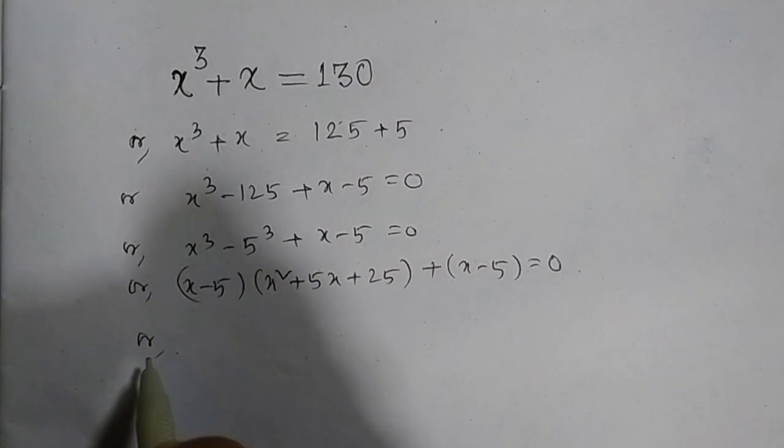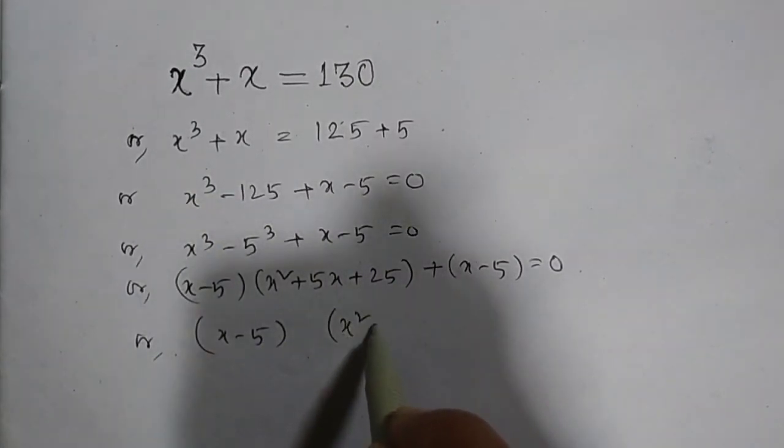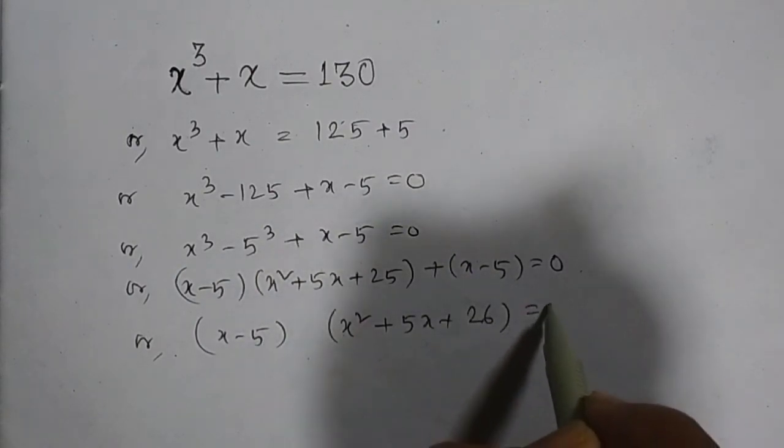Now taking x - 5 as common, we have (x - 5)(x² + 5x + 26) = 0.